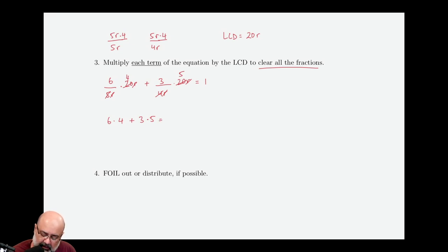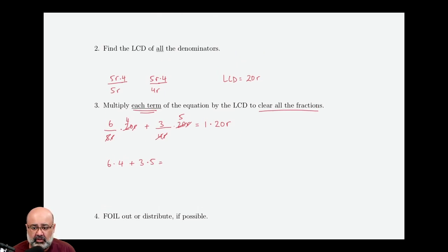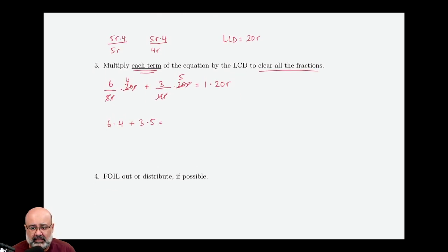Oops, I forgot to multiply the right-hand side by 20r as well. Again, we have to multiply each term by the LCD, which is 20r. So we have 6 times 4 plus 3 times 5 equals 1 times 20r.